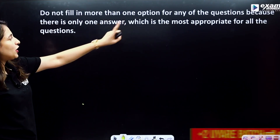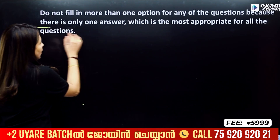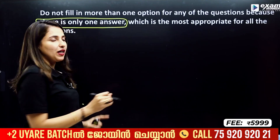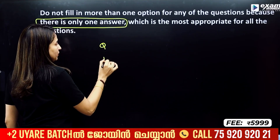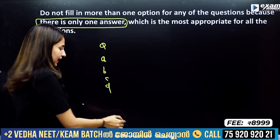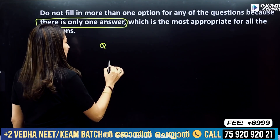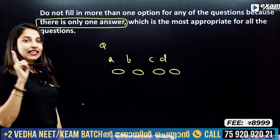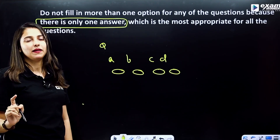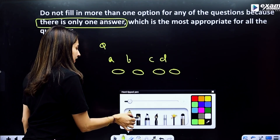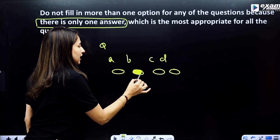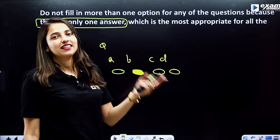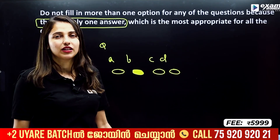Do not fill more than one option for any question because there is only one answer. We are going to answer MCQ questions. We have 4 options: A, B, C, D. Where all options A, B, C, D are there as bubbles. If you want to mark your answer, fill the bubble completely for your chosen option.